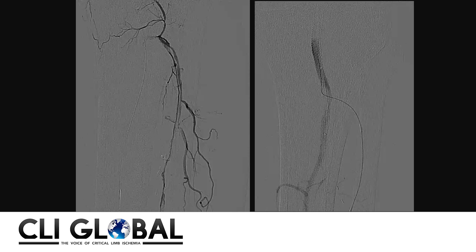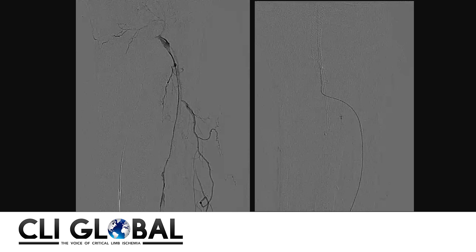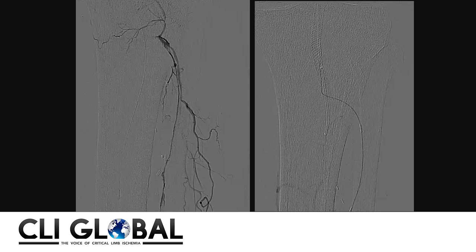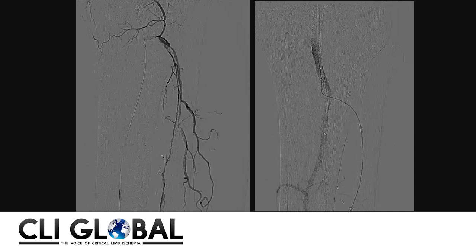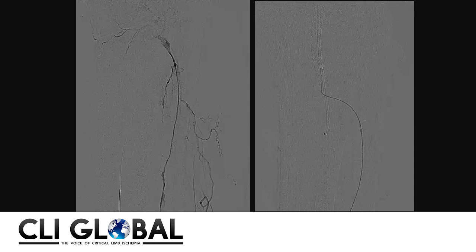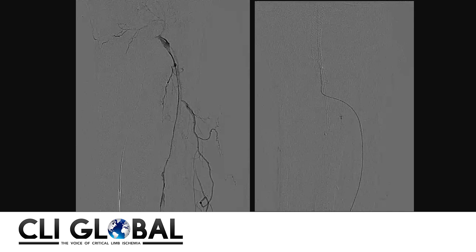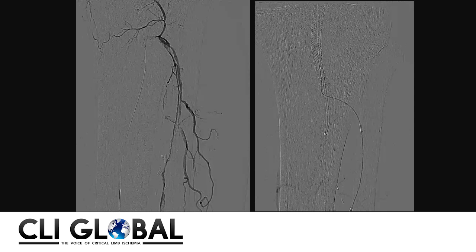We proceeded with accessing the dorsalis pedis artery and anterior tibial artery in retrograde fashion. On the first angiogram you can see the dissection in the proximal anterior tibial artery — that's what we noticed in the first case and was probably the reason why we lost the anterior tibial artery in the first place.